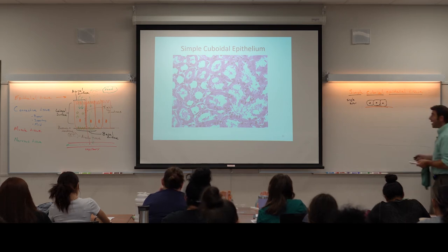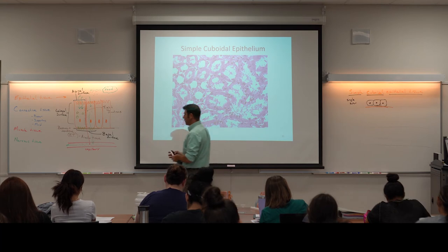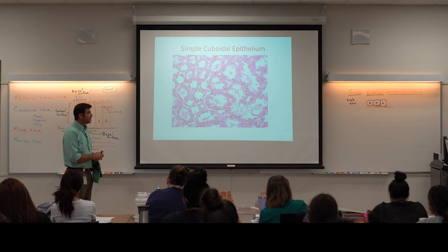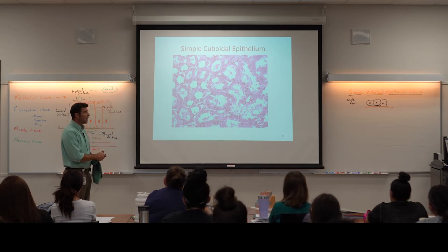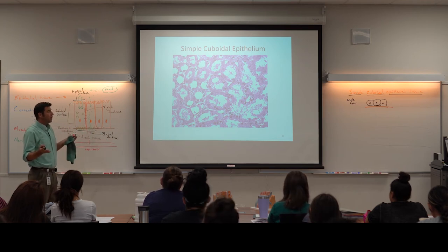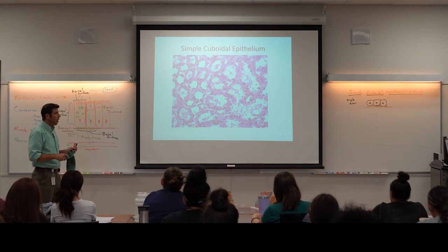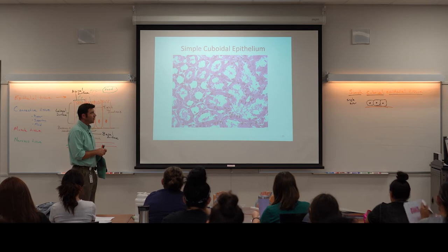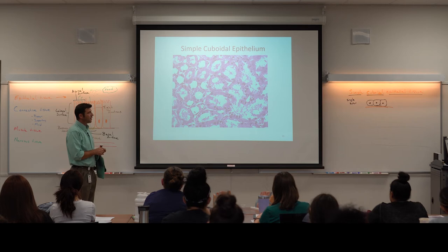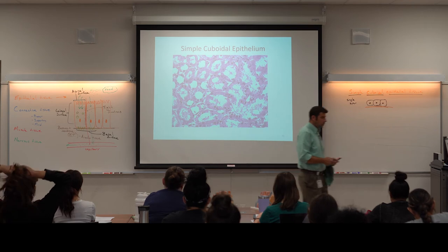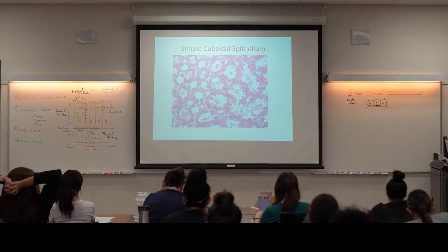Here's a slide of simple cuboidal epithelium. The problem with using slides is that sometimes 90% of the slide is not what you're looking for. But right here is a good example of simple cuboidal epithelial tissue — like all epithelial tissue, it's lining some type of surface, in this case the surface of a kidney tubule.